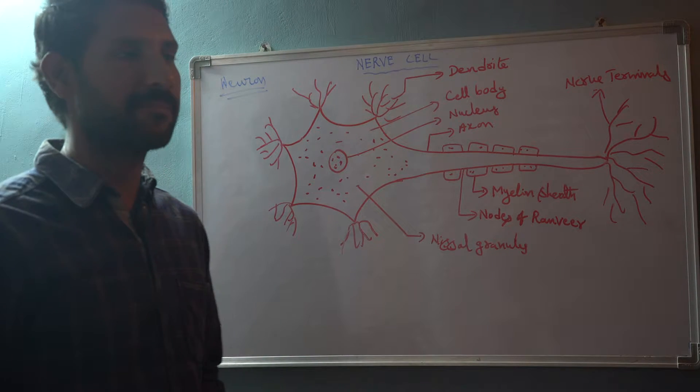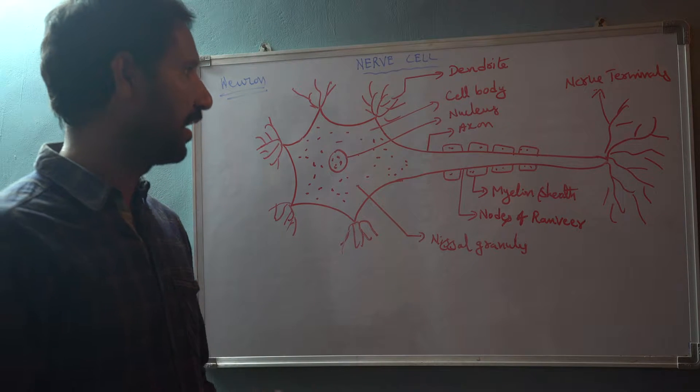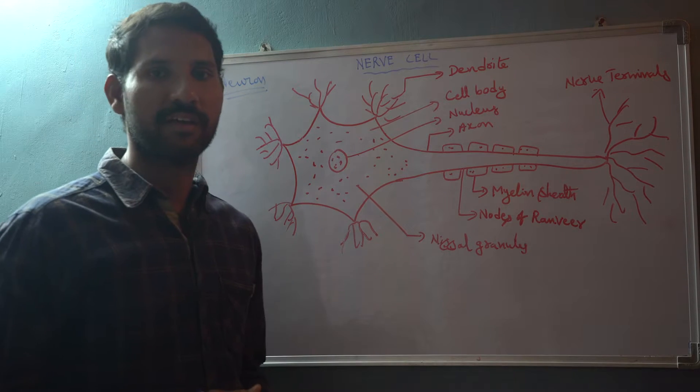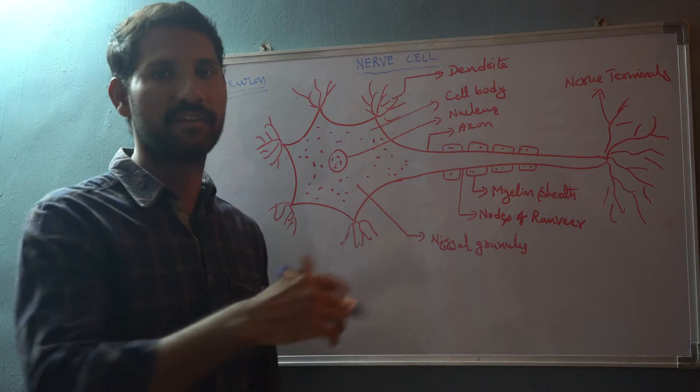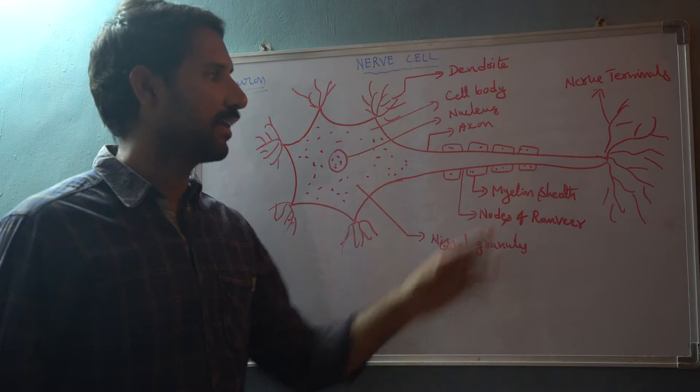Dendrites help in receiving information from other neurons or nerve cells. The cell body helps in the transformation of information to the axon. Through the axon, it sends information to another interconnected nerve cell.